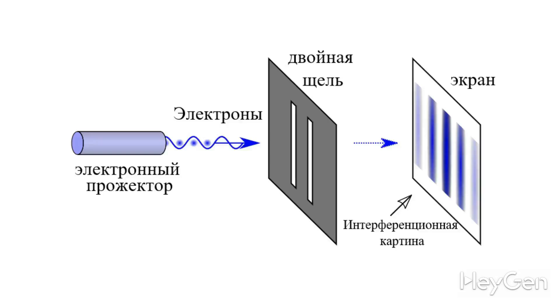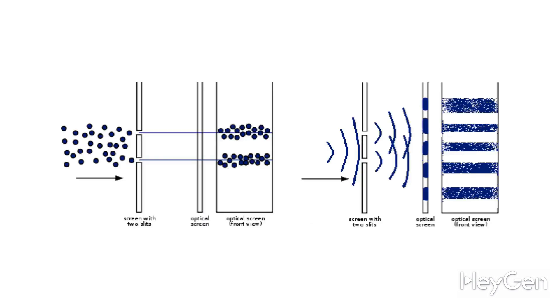But despite all this, we need to somehow explain moments like the double-slit experiment. The double-slit experiment is actually quite simple. It consists of taking a certain plate, making slits in it, placing a screen behind it, and then setting up a light source. In one case, the light source forms an image of the two slits, and in the other case, we have the result of interference.